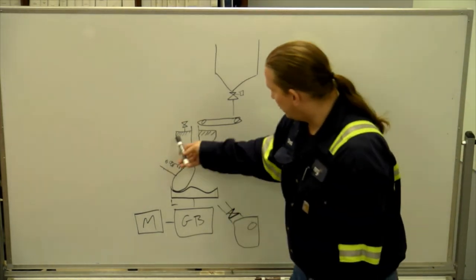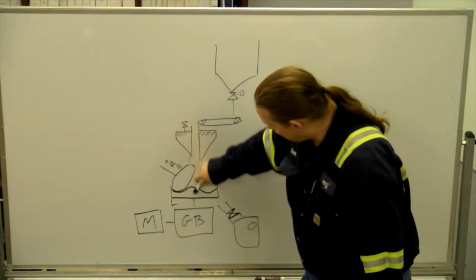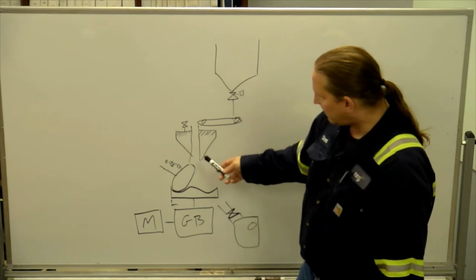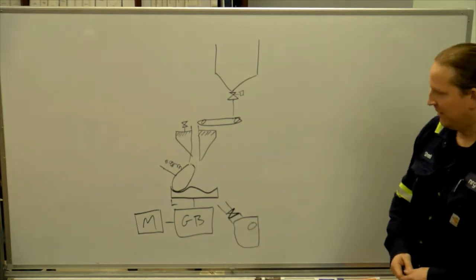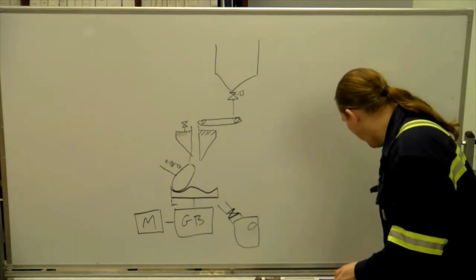So it goes through the classifier, the bigger parts fall down and make another lap. Now, what moves it up? What makes it go up to the top? Air from the PA fan.